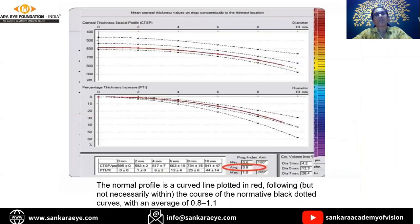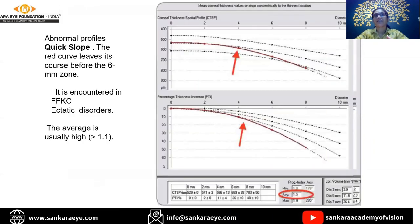The pachymetric thickness spatial profile is a plot of how the cornea progressively thins or thickens from the thinnest point outward. In a normal cornea, the red line runs between the black dotted lines with a slow, uniform transition. In pathological diseases with focal thinning, there is a quick slope. Classically, if the red curve moves away suddenly before the 6 millimeter mark, it indicates ectatic disease, seen in keratoconus or PMD patients. In PMD, you get a reverse pattern because the thinning is extremely peripheral.